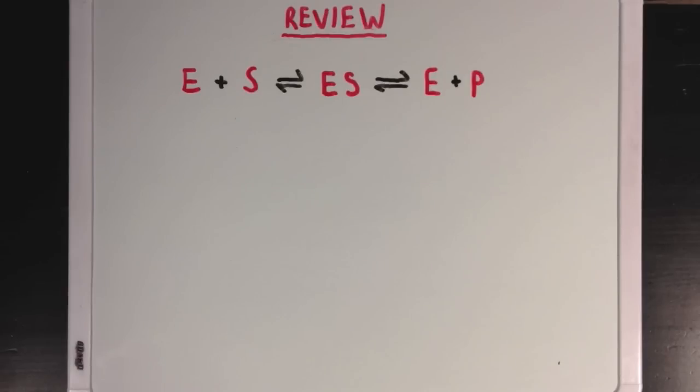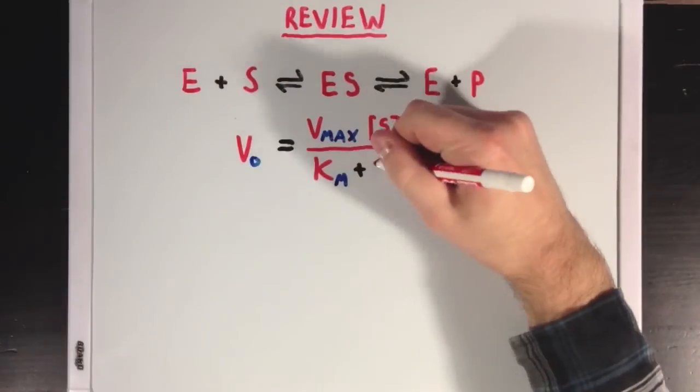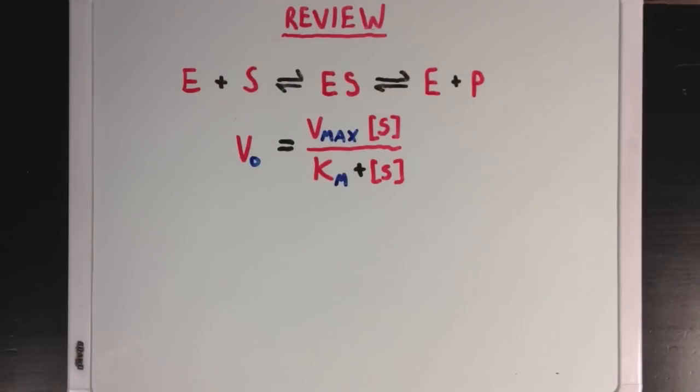and second, the formation of product. And using this idea, we can derive the Michaelis-Menten equation, which is very useful for quantitatively looking at enzyme kinetics.